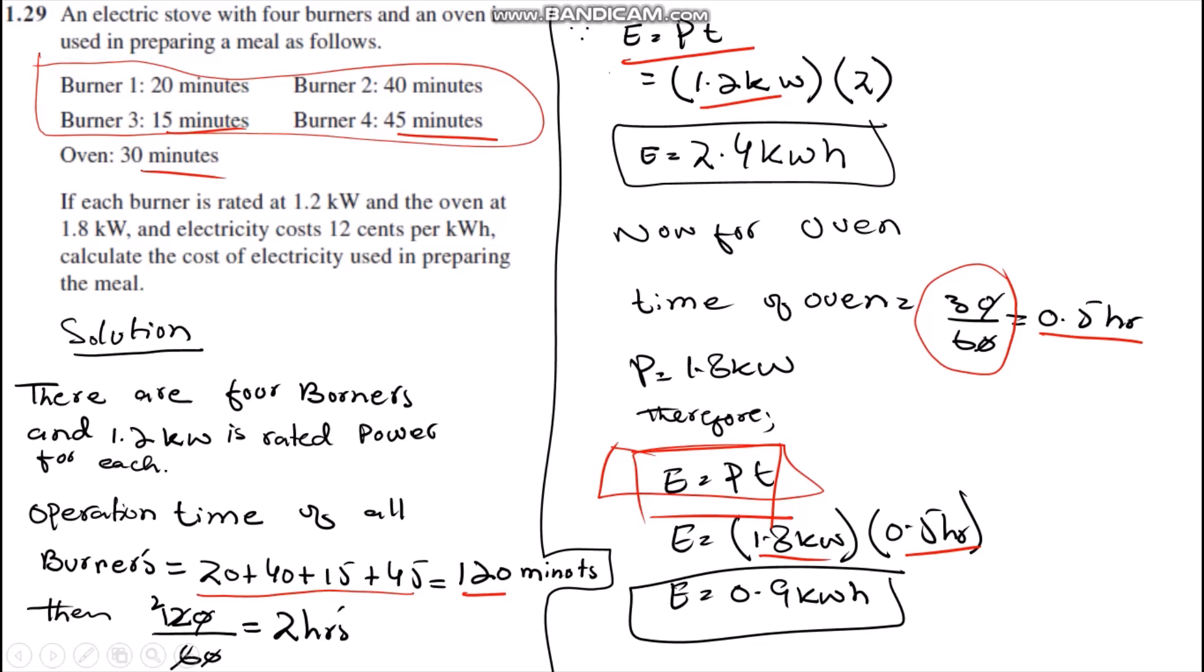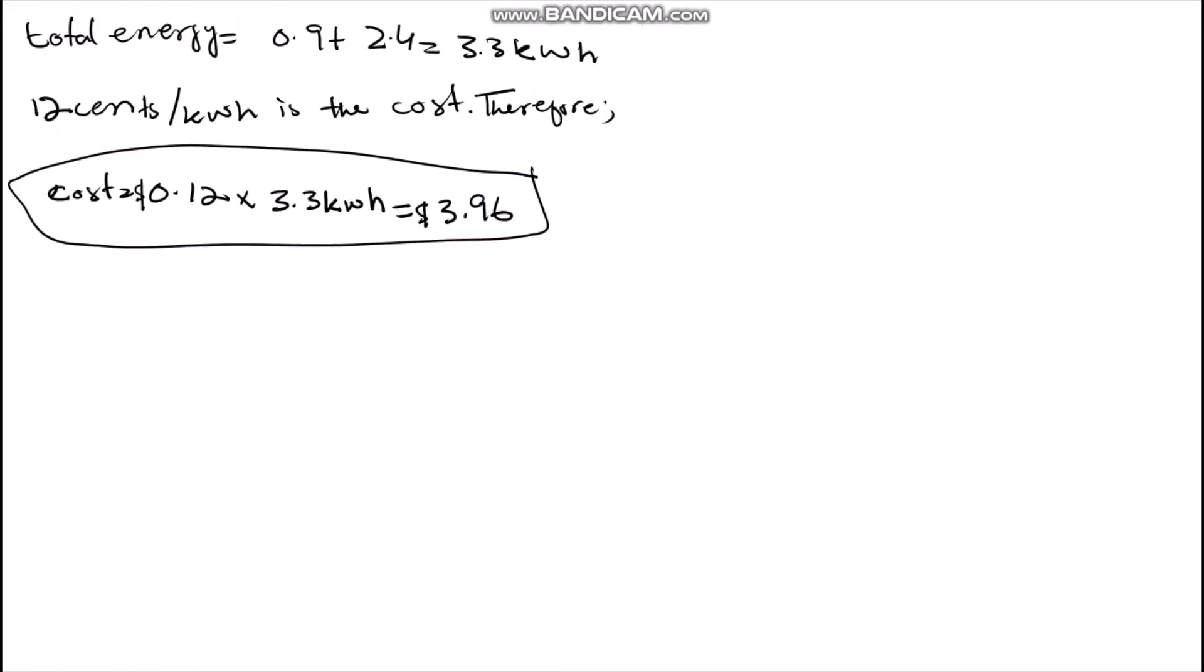In order to get total energy, we simply add 0.9 plus 2.4 kilowatt hours, therefore we get 3.3 kilowatt hours of energy. It means all burners and oven consumed 3.3 kilowatt hours.